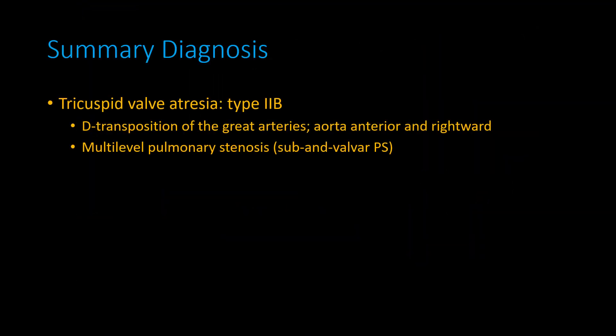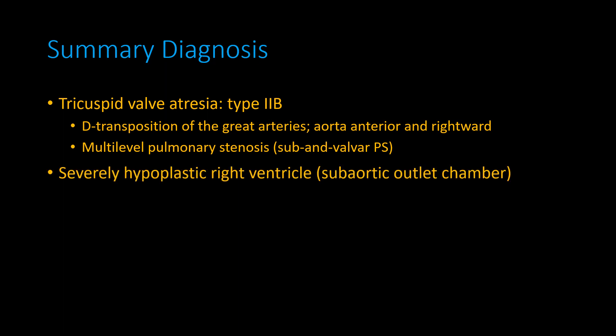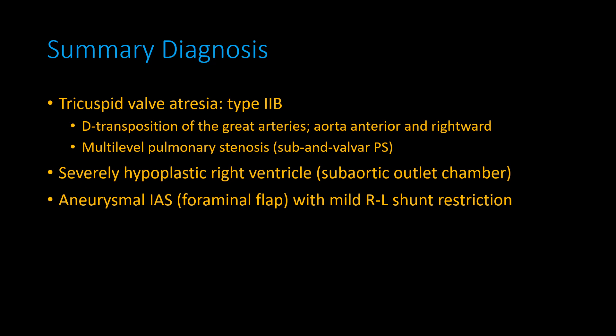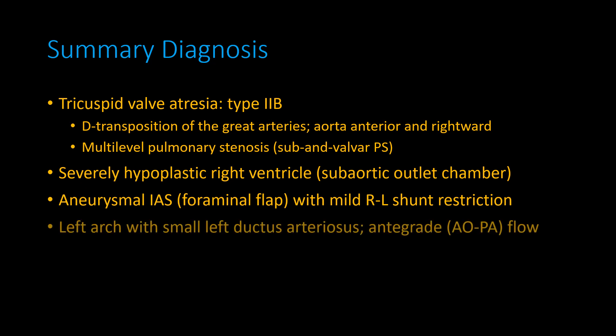Summary diagnosis: tricuspid valve atresia type IIb — meaning detransposition of the great arteries with an anterior and rightward aorta. Multi-level pulmonary valve stenosis with sub-pulmonary narrowing, a posteriorly deviated subpulmonary conus, and a dysplastic pulmonary valve likely stenotic postnatally. Severely hypoplastic right ventricle serving as the subaortic outlet chamber, where the aorta arises from the small RV and the LV pumps through a VSD to reach the aorta. The foramen ovale flap is aneurysmal, bowing right to left with mild volume-related restriction. There is a left aortic arch with a small ductus arteriosus with antegrade flow from aorta to pulmonary artery.